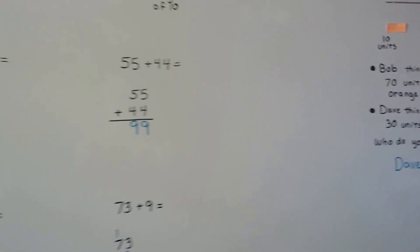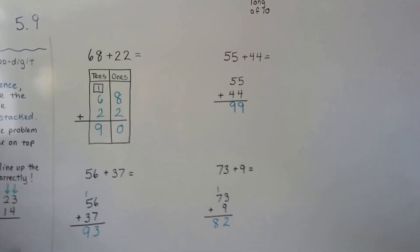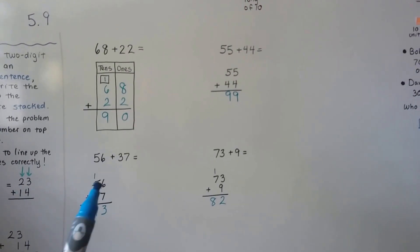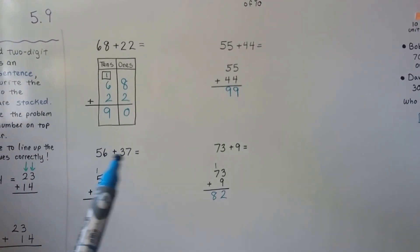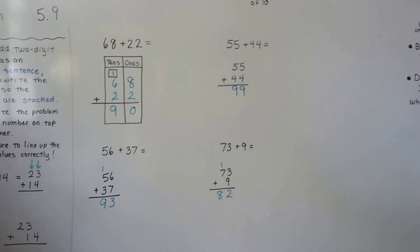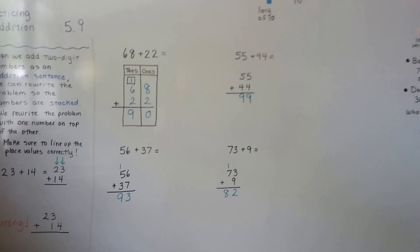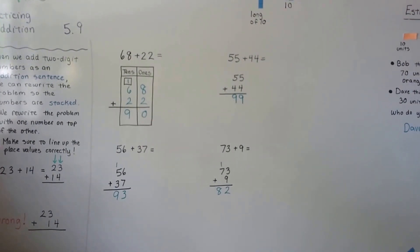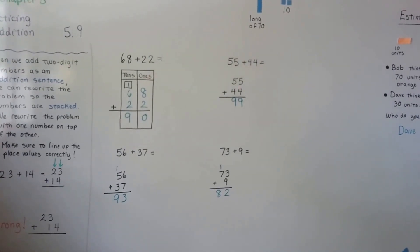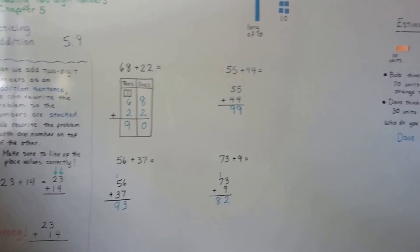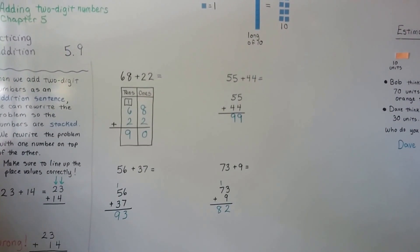So practice doing some two-digit addition. Try doing it without the boxes. And try rewriting an addition sentence stacked. And make sure you get your columns of your ones and tens lined up correctly. If you're following along in the book, there's lots of practice on this page. I'll see you next video. Bye.